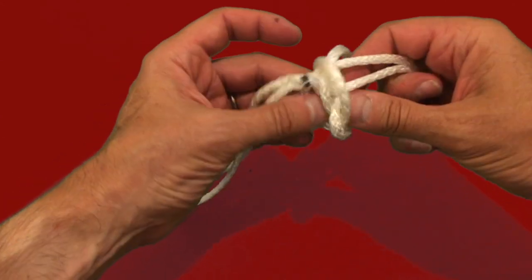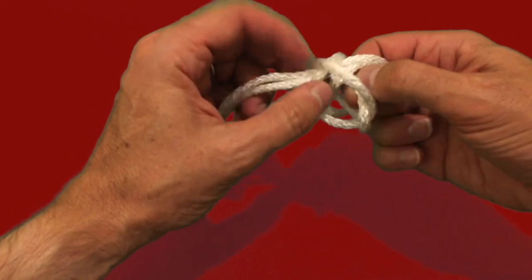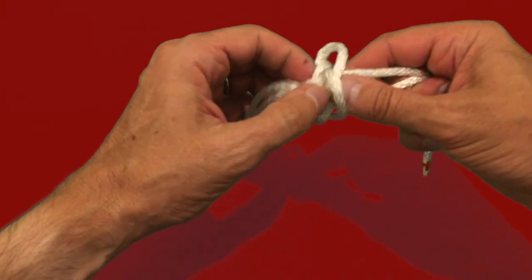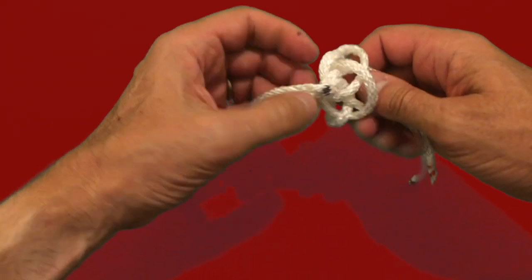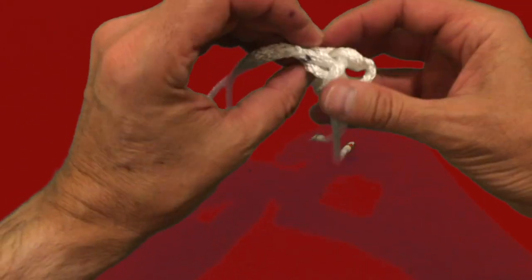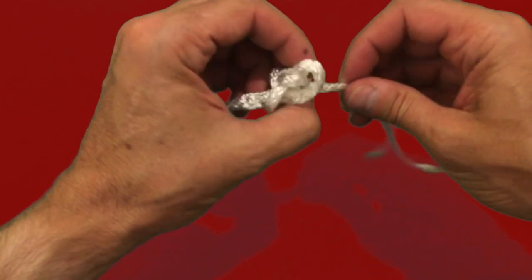This effectively completes the diamond knot, but you now need to have a bit of patience as you tease the individual lines around on themselves, making sure that you pull the knot down to where we created the initial locking splice.